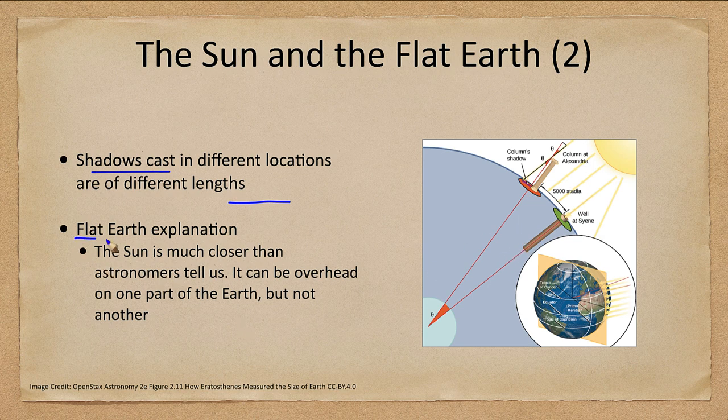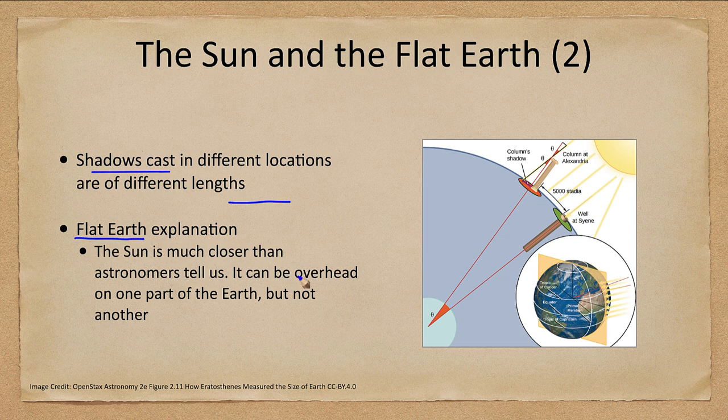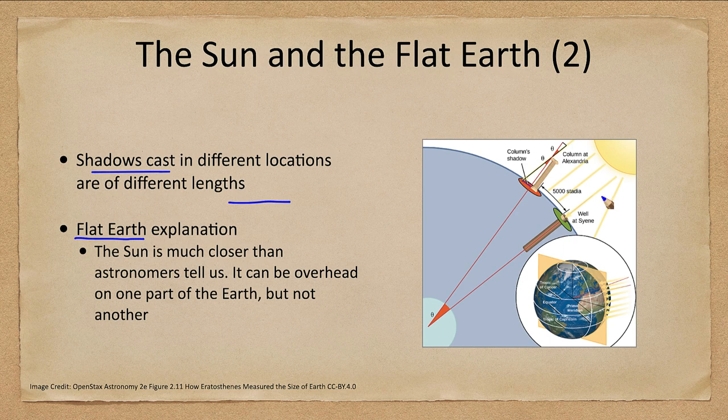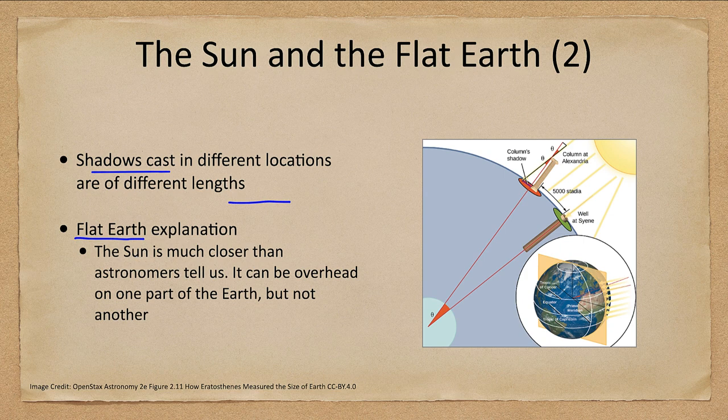However, under the flat Earth explanation, the sun is much closer. The sun is very close to us, and therefore it can be overhead at one part of the Earth but not the other part of Earth.